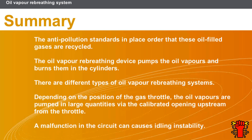In this section we covered the following points: anti-pollution standards require that oil-filled gases are recycled. The oil vapour rebreathing device pumps the oil vapours and burns them in the cylinders. There are different types of oil vapour rebreathing systems. Depending on the position of the gas throttle, the oil vapours are aspirated to a greater or lesser degree. A fault in the circuit can cause idling instability.